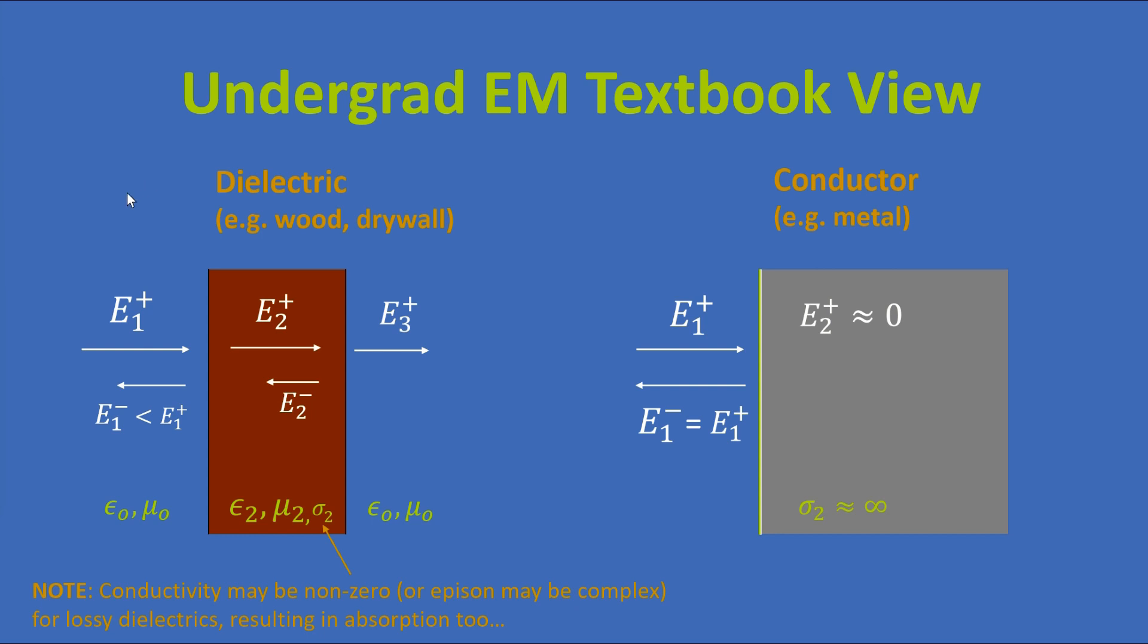I'll begin by explaining what all this means. This dark brownish colored region is a side view of wood, say plywood or particle board or something, or it could be drywall. The white arrows represent ray tracing diagrams of electromagnetic signals impinging on the left side of this wood. E sub 1 superscript plus here means that this is the electric field strength hitting this wood as it goes in the positive direction, which is to the right. When it gets to the wood, it experiences a change in permittivity and permeability, perhaps, but mainly permittivity.